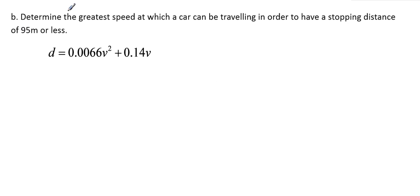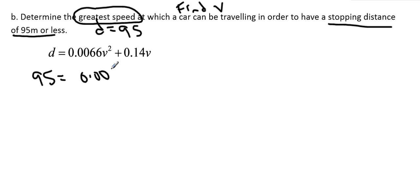Determine the greatest speed at which a car can be traveling in order to have a stopping distance of 95 meters or less. So now it's telling me the stopping distance is 95, so we have 95 meters in which to stop the car. What is the greatest speed that we can be traveling at to stop safely? It's saying find v when d is 95. So we're going to substitute d for 95 and that gives me this.